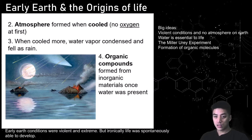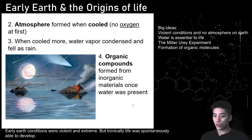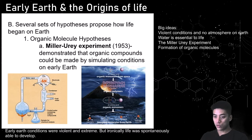As temperatures cooled down, water vapor condensed and fell as rain, creating oceans. Once you have oceans, you can form organic compounds because water is a really good solvent — organic compounds can be made from inorganic things. One of the most important experiments that helped explain the origins of life was the Miller-Urey experiment in 1953, which demonstrated that organic compounds could be made by simulating conditions of early Earth.